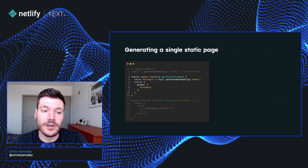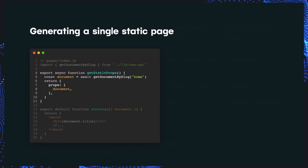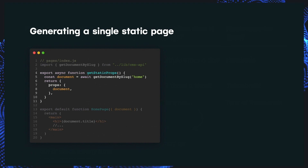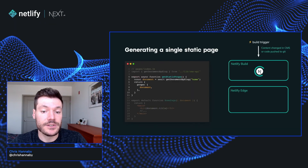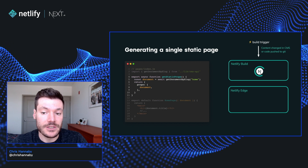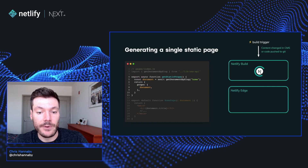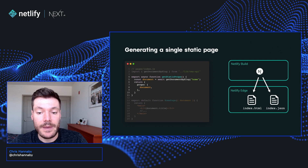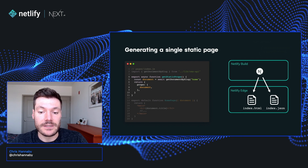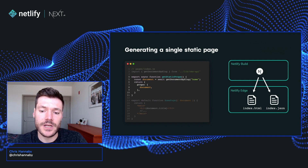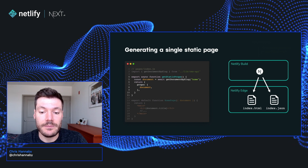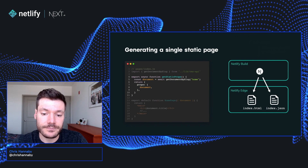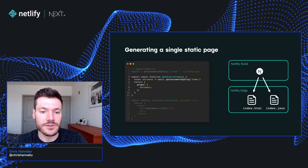To make use of static generation, we're going to fetch any data that our page needs in a function called getStaticProps, and we return that data as props that are passed to our page component. When we trigger a build, Next.js will run these functions server-side, fetch the data, and embed it in HTML pages, and those can be served directly from an edge network. This means that our content is easily discoverable by search engines, and that pages can be delivered extremely quickly when they are requested by our users. This process also generates JSON files that are used when we navigate between pages using client-side routing.